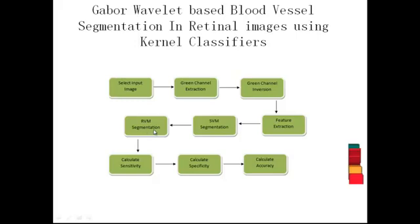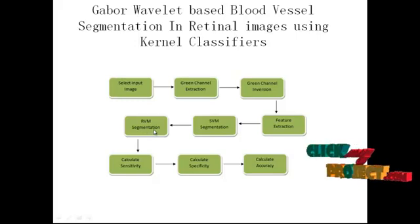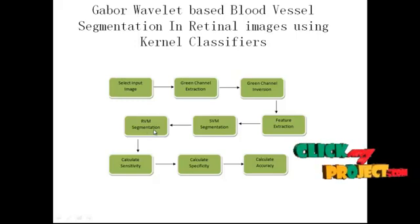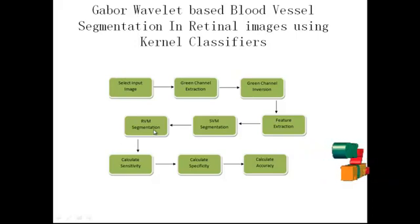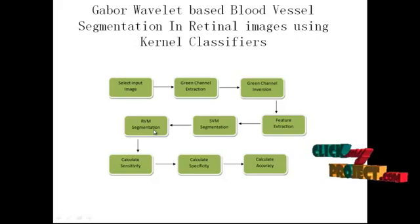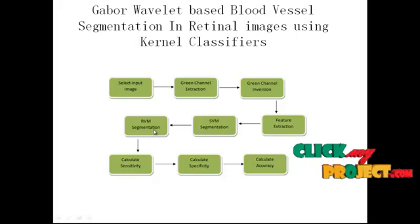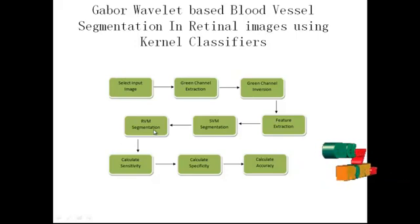In RVM segmentation, a machine learning technique that uses Bayesian inference is used to obtain the parsimonious solution for regression and classification.